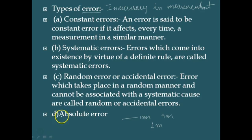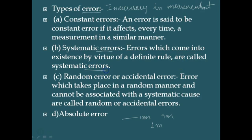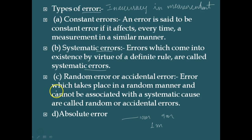The second type of error is called systematic error. Errors which come into existence by virtue of a definite rule are called systematic errors. Systematic errors tend to be in one direction — either positive or negative. Such errors cannot be both positive and negative simultaneously.